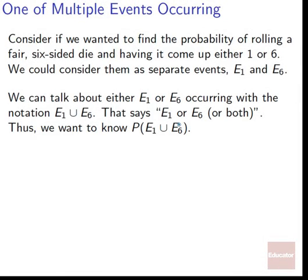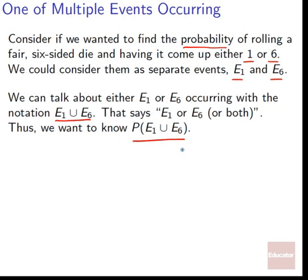Consider if we want to find the probability of rolling a fair six-sided die and having it come up either 1 or 6. We could consider them as separate events: E1 and E6. We can talk about either E1 or E6 occurring with the notation E1 union E6 — a way of saying E1 or E6 or both.